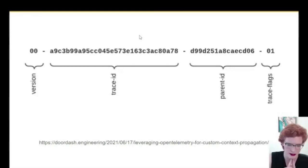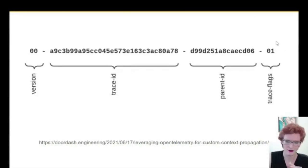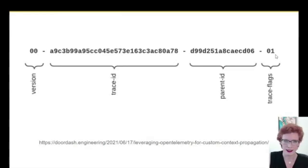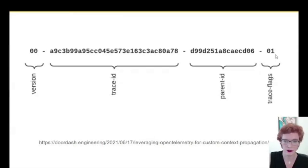On flags besides 00 and 01: for now those are the only two valid flags. It's a two-digit flag field, so theoretically there are lots of valid flags that could be added, but the standard doesn't include them yet because no other flags beyond sampling have been deemed necessary.